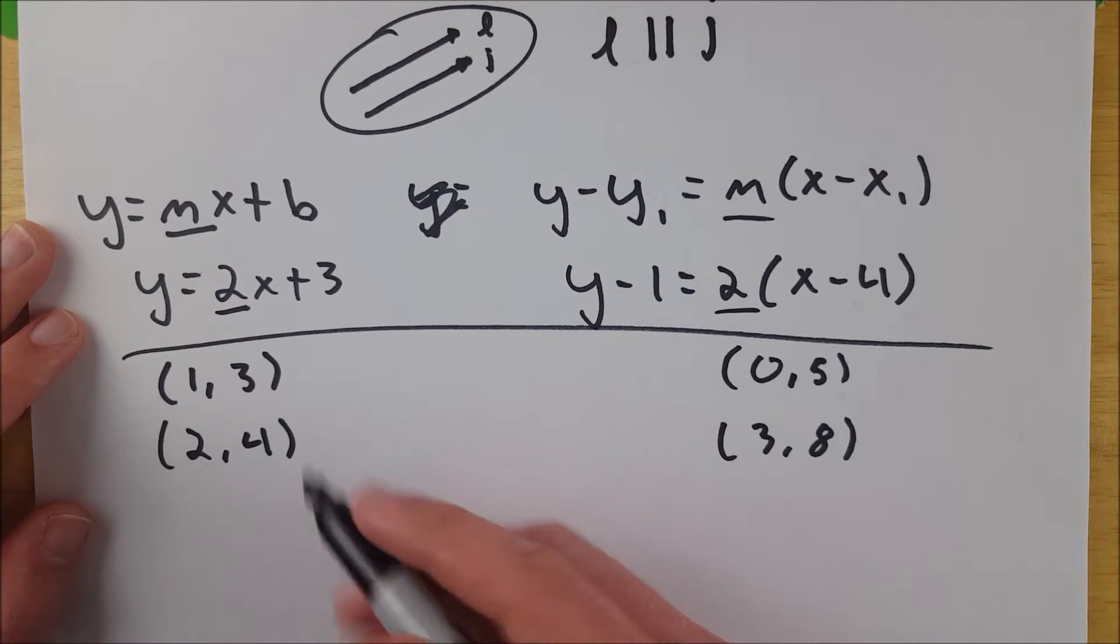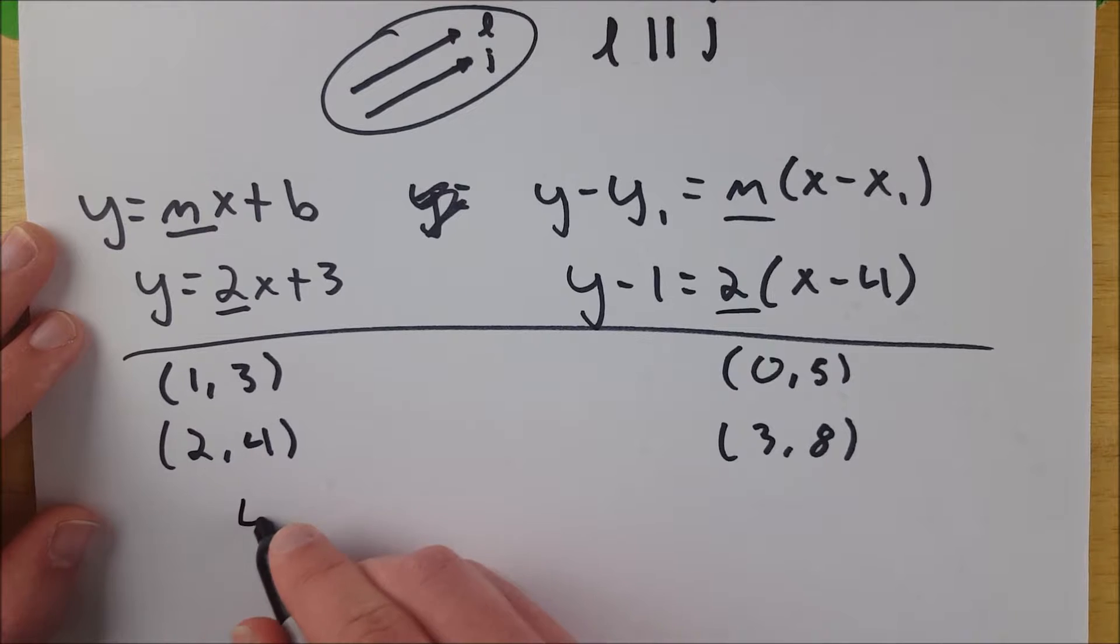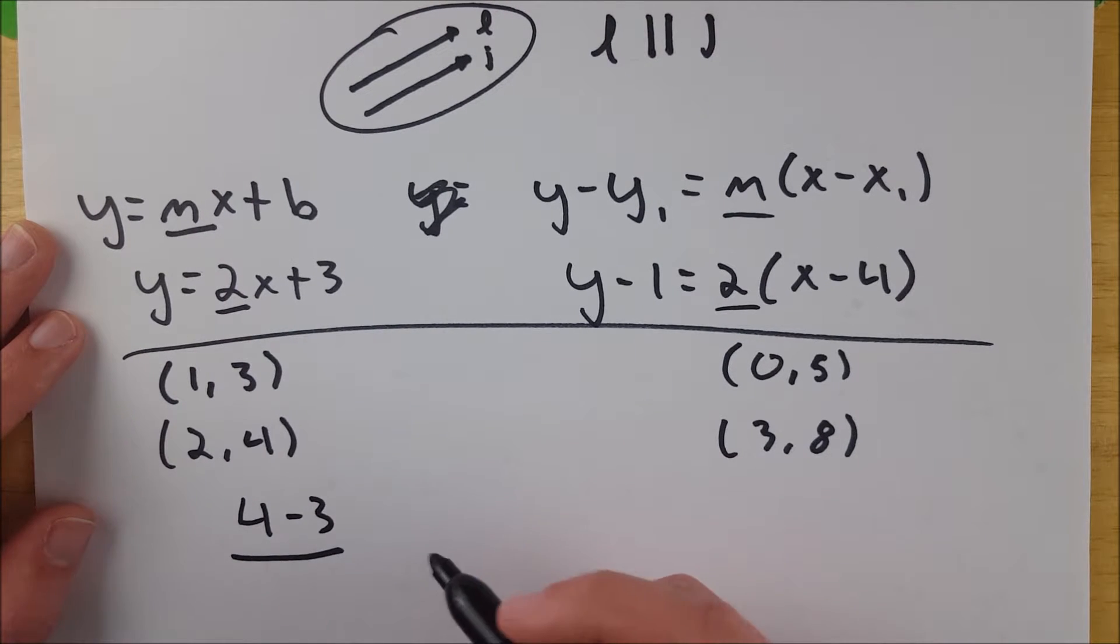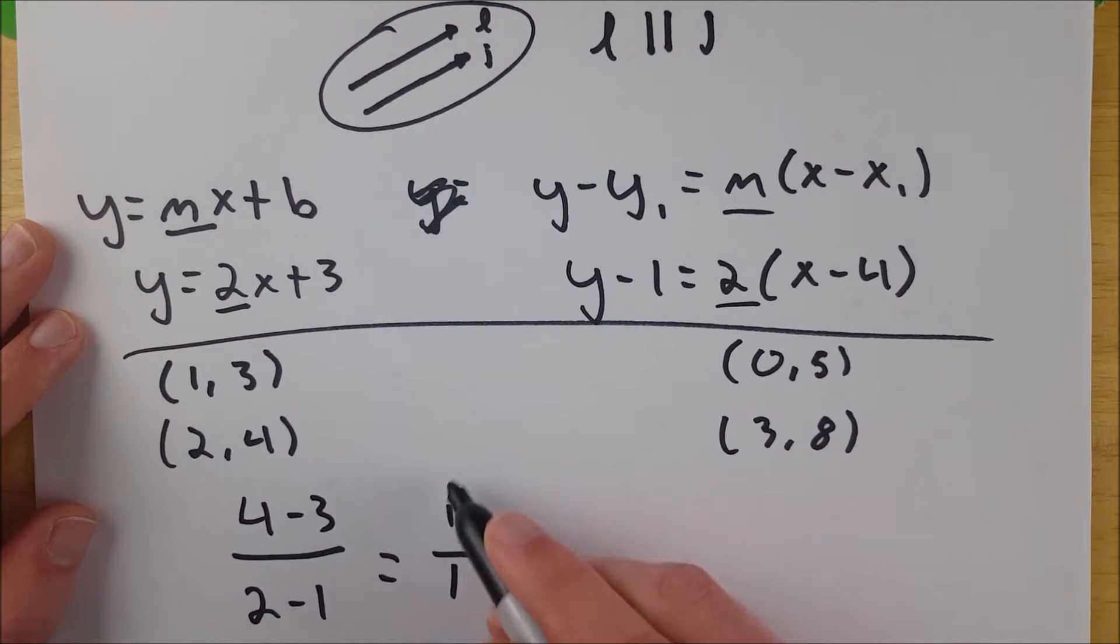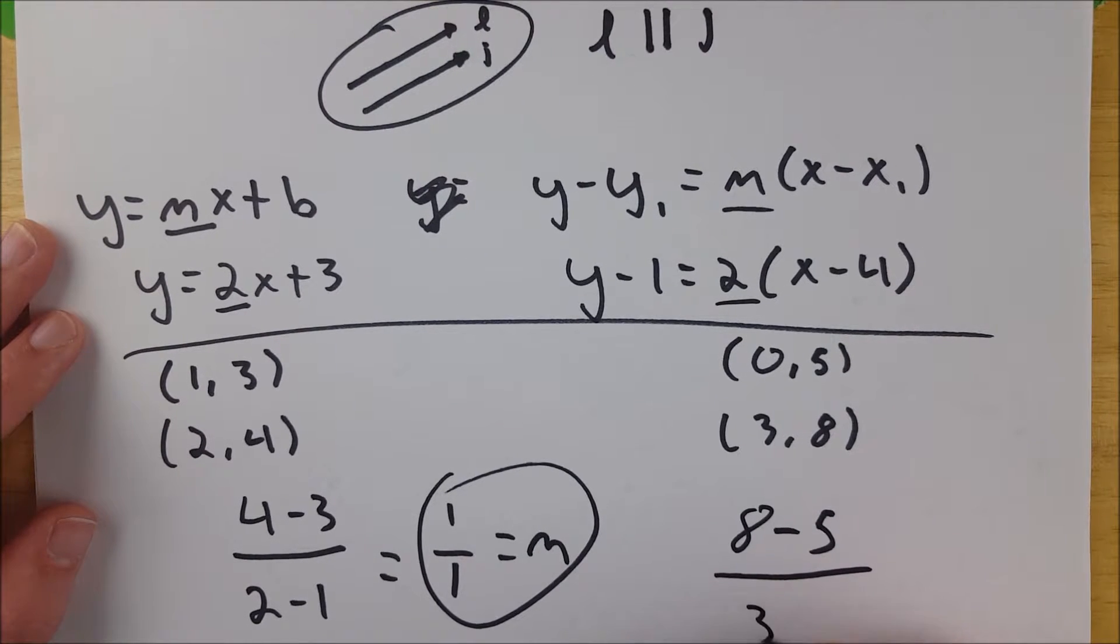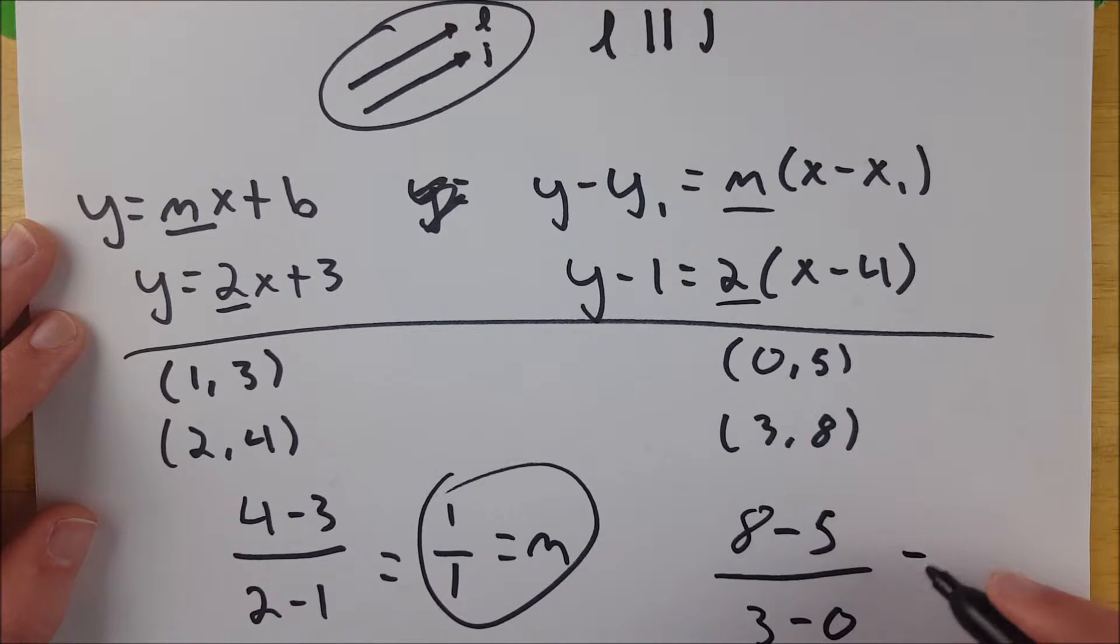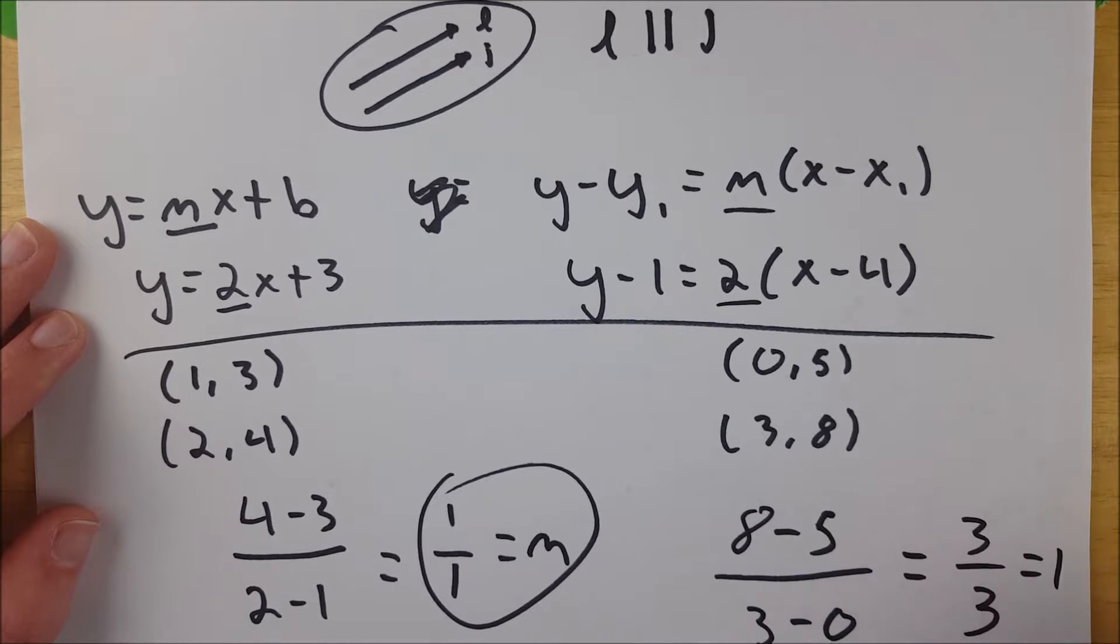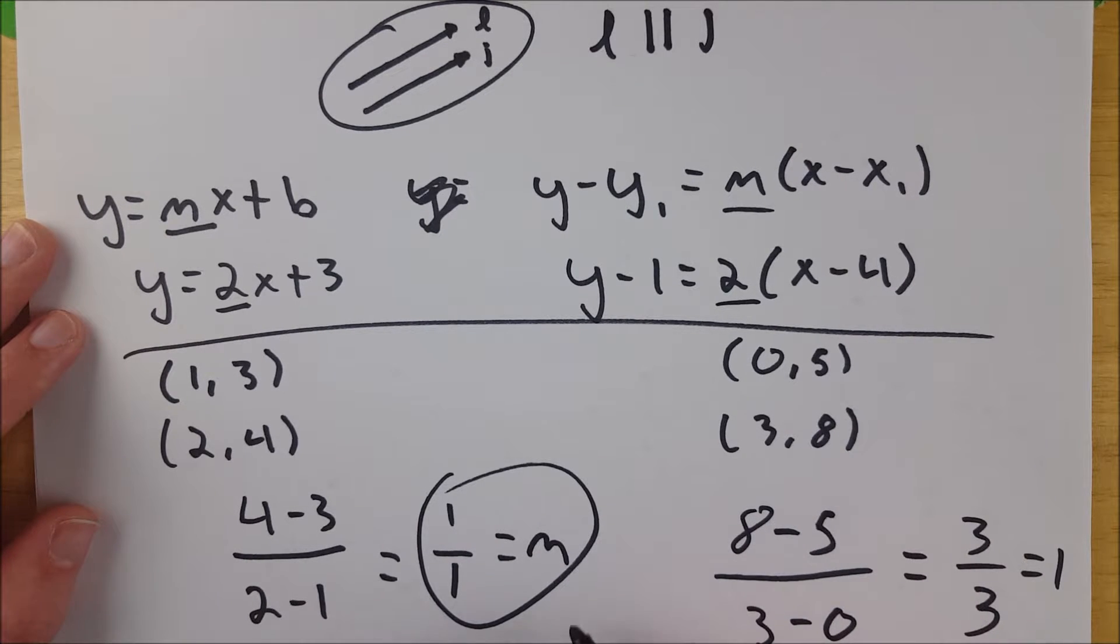So for this line, we use the slope formula. We subtract our y coordinates, 4 minus 3, and divide by the difference in our x coordinates, 2 minus 1. And this is equal to 1 over 1. 4 minus 3 is 1, 2 minus 1 is 1. So we have a slope of 1. That's equal to m. And then if we go over here and do the same thing, we've got 8 minus 5 divided by 3 minus 0. And that is equal to 8 minus 5 is 3, 3 minus 0 is 3, and that is equal to 1. So here we have that their slopes are equal because they both have a slope of positive 1.